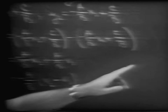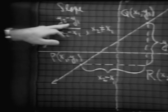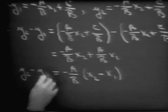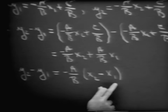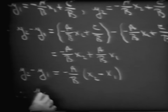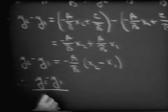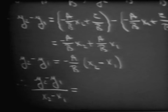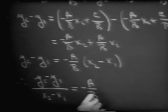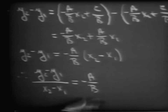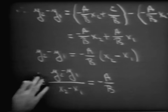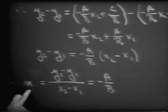Let's remind ourselves that the slope is the ratio of the change of the y coordinates to the change of the x coordinates. We have y sub 2 minus y sub 1 equals the opposite of A over B times the quantity x sub 2 minus x sub 1. Dividing both sides by x sub 2 minus x sub 1, we have y sub 2 minus y sub 1 divided by x sub 2 minus x sub 1, and that turns out to be equal to the opposite of A over B. We have already said that this is the slope number. Therefore the opposite of A over B is the slope number m.